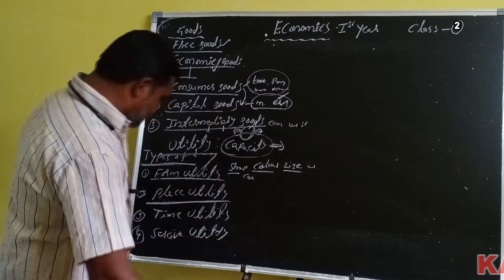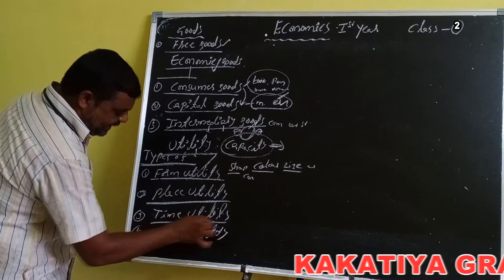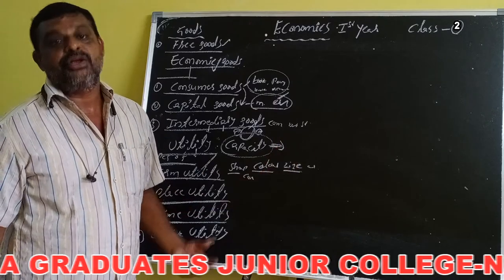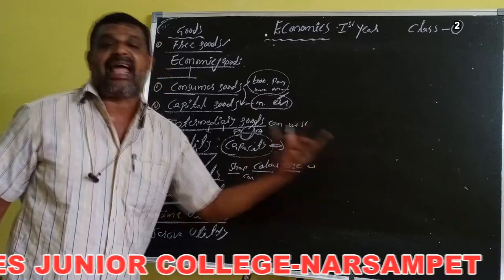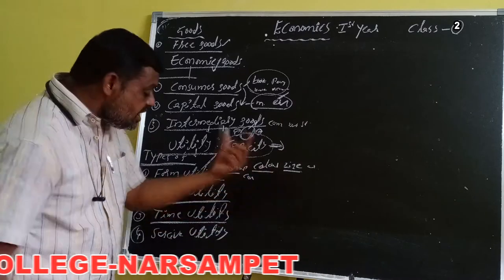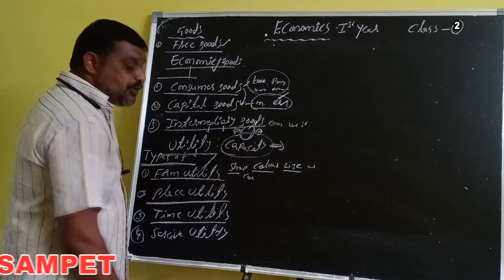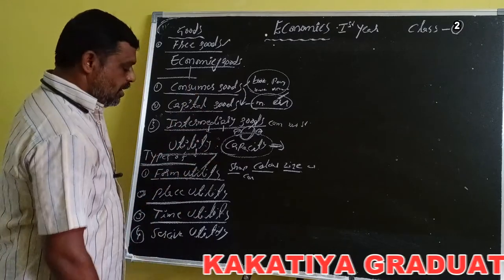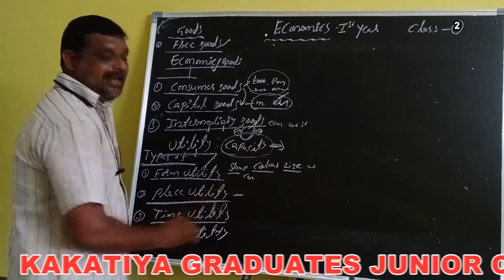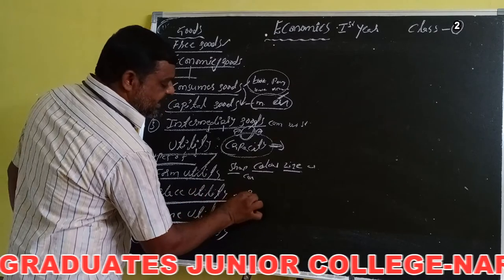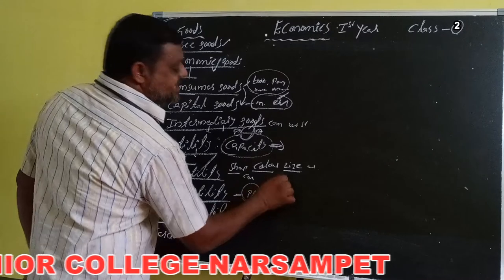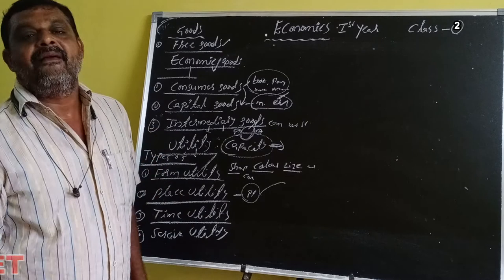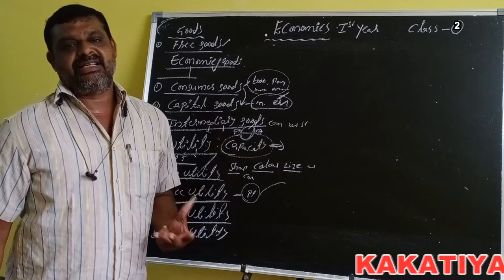Time utility means utility created by storing a commodity for some period of time. For example, during the harvest season, food grains are available. In the rainy season, heavy paddy is produced and rice is used in other seasons as well.